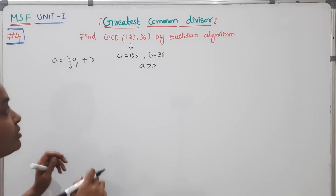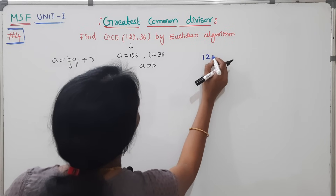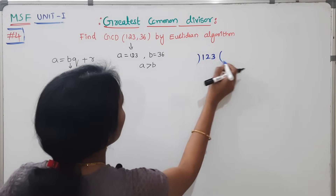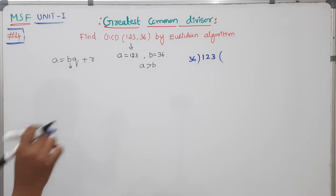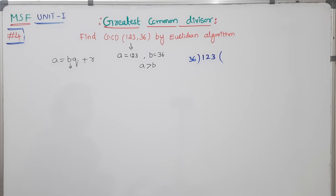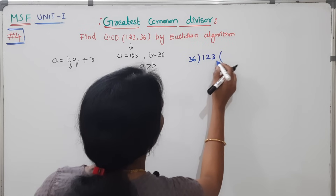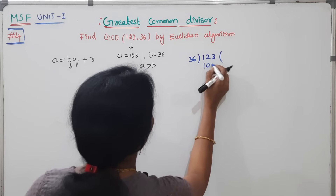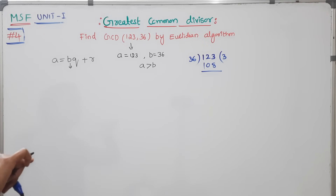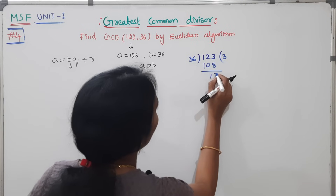Now I am going to consider A. What is the remainder? A is 123. First division: 36. How much is 36? 36 times 3 is 108. Then subtraction gives us 15. What is the remaining value? 15.